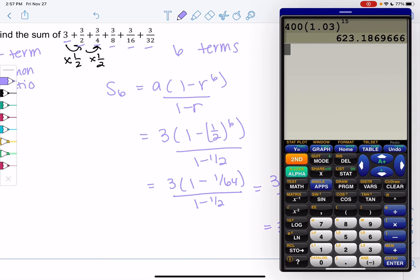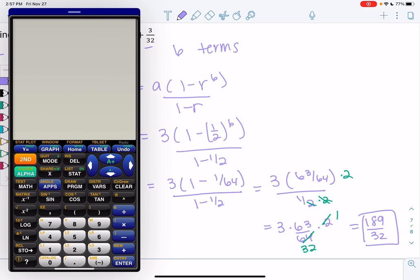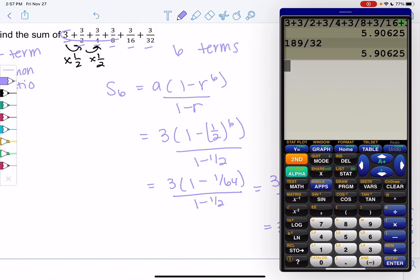So we can check our work. 3 plus 3 halves plus 3 fourths plus 3 eighths plus 3 over 16 plus 3 over 32. Let's see if 189 over 32 is the same thing. Yep. Two different ways of finding the sum, but the shortcut formula was easier because finding LCD would have been a hassle.